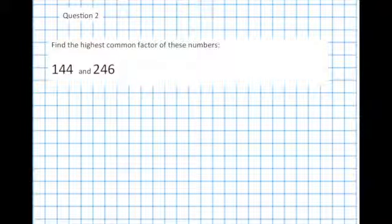Question 2. To find the highest common factor, we need to decide what numbers will divide into both of these numbers, 144 and 246. And then we need to pick the highest number that divides into both. That would be the highest common factor.